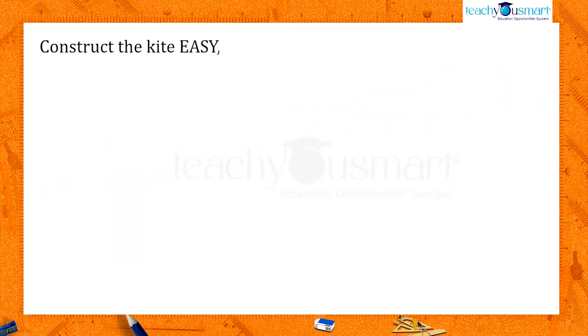Construct the kite EASY with AY equals 5 cm, EY equals 4 cm, and SY equals 7 cm.